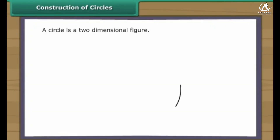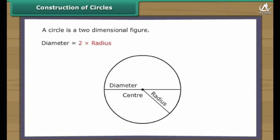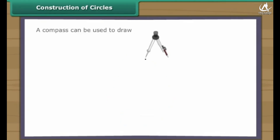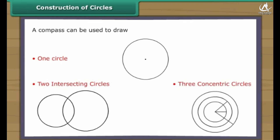Construction of Circles. A circle is a two-dimensional figure. Every circle has a center. The distance between the center and the boundary of a circle is known as its radius. The line segment through the center of a circle with its end points touching the boundary of the circle is known as the diameter. The diameter of a circle is twice its radius. We draw circles with the help of a compass. A compass is an instrument with two arms. While one arm remains fixed, the other arm with the pencil moves freely. Let us use a compass to draw one circle, two intersecting circles, and three concentric circles.